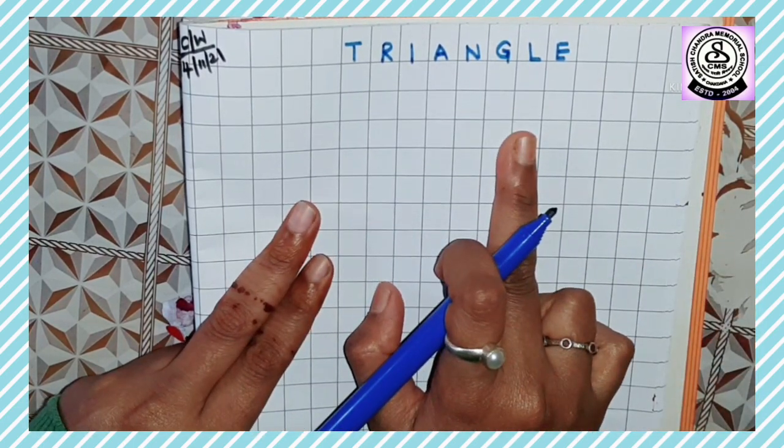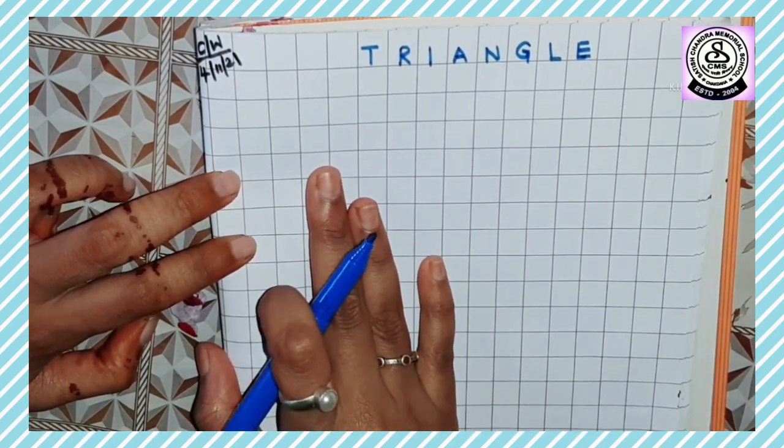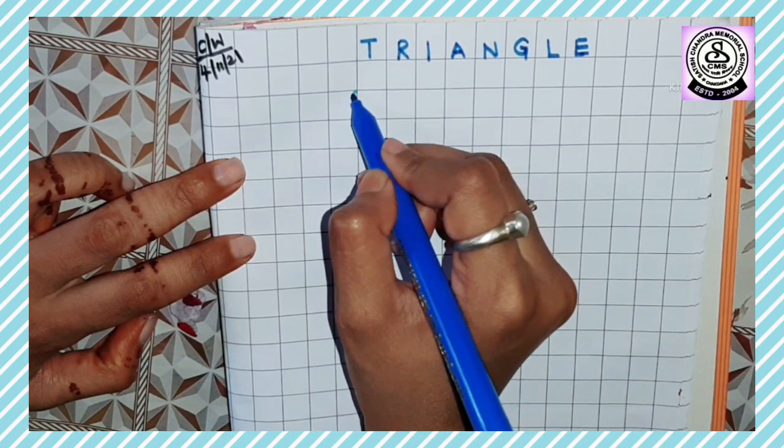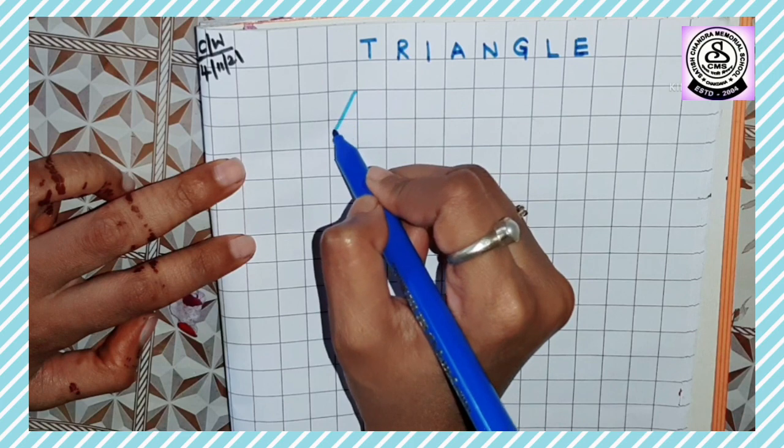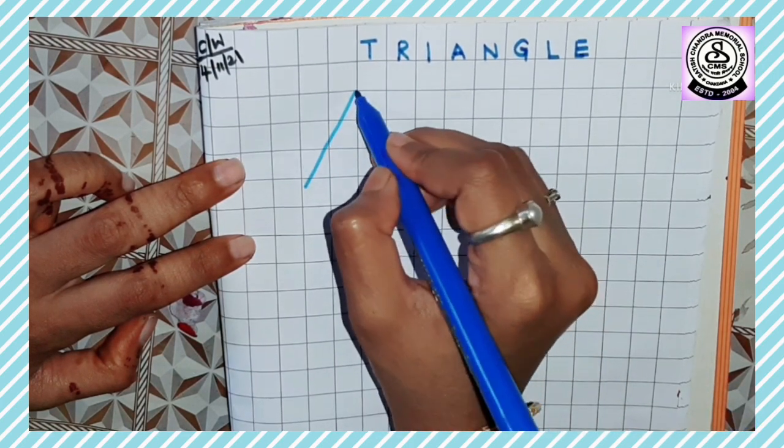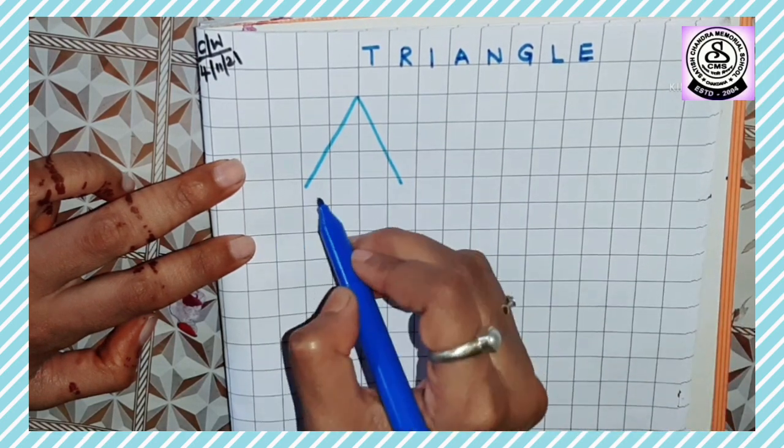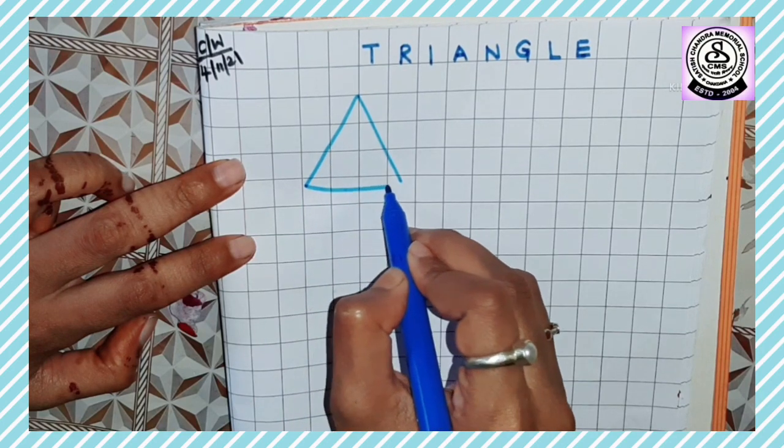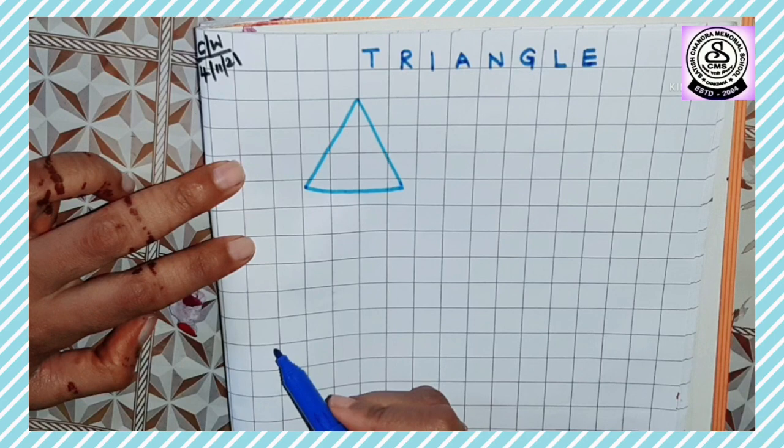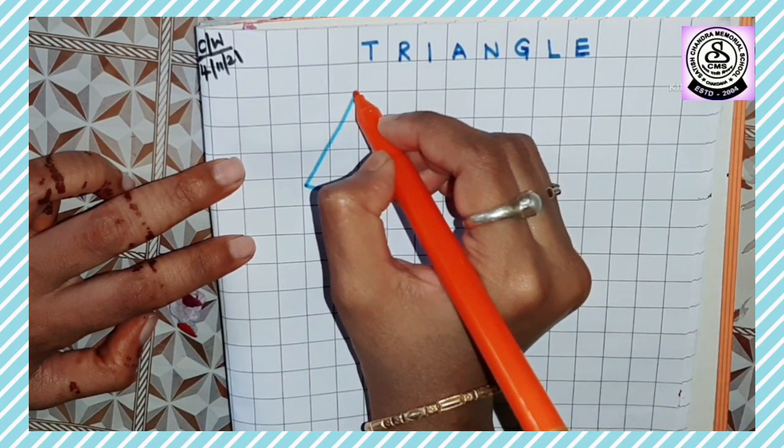See, heading we have written. Now let's draw the first object. So first we will draw a birthday cap. Draw a slanting line, draw another slanting line. Okay, by joining both the lines, draw a sleeping line. Okay, on the top draw a small pom-pom. Okay, done.